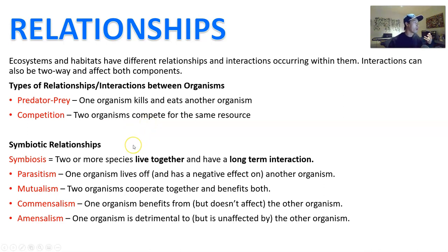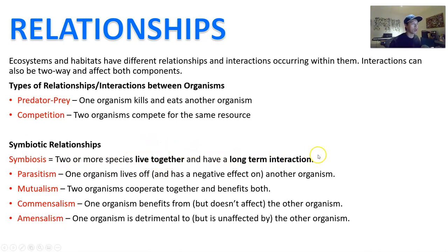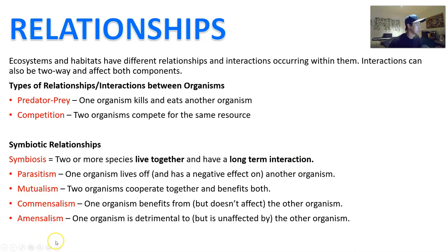When there are symbiotic relationships, that is when you have two or more species that live together, or at least in very close proximity, and have a long-term interaction — a very close connection over a long period of time. There are four types of symbiotic relationships: parasitism, mutualism, commensalism, and amensalism.